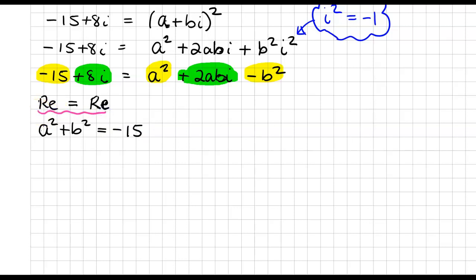And then for my imaginary, equal to imaginary, now remember when you're doing this part, you don't write down the i's. So I have, again, I'll put my algebraic part first, so 2AB is equal to 8.